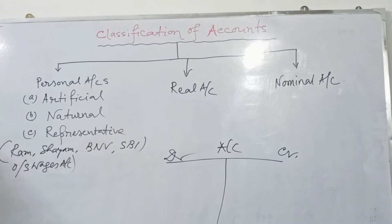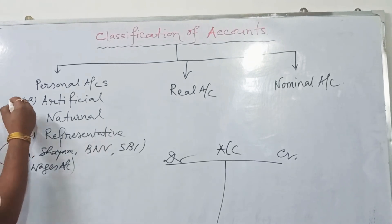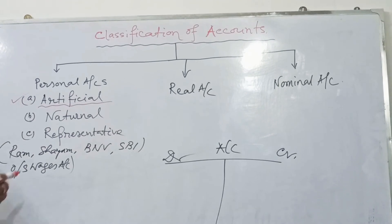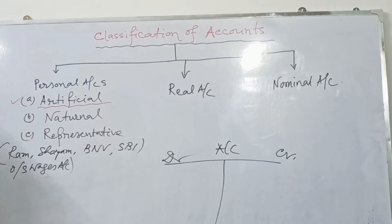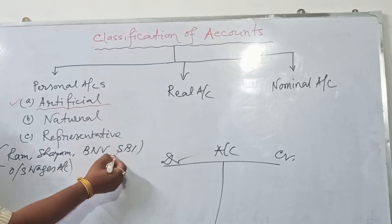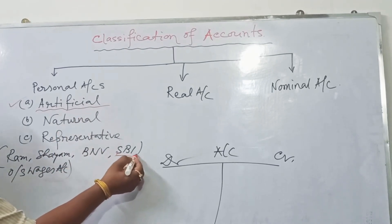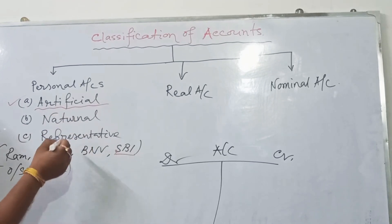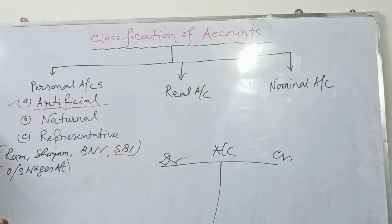There are three types of personal account. First, artificial persons — those persons which are created by law. For example, State Bank of India is an artificial person; it has no physical form, no hands, but it is a type of organization created by law.